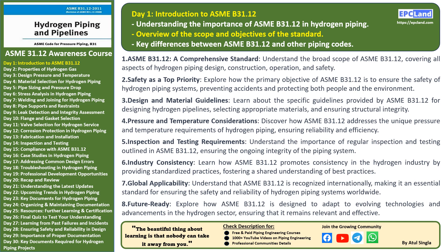Now that we have a solid foundation of why ASME B31.12 is essential, let's dive into the scope and objectives of this standard. ASME B31.12 is a comprehensive guide covering every crucial aspect of hydrogen piping. Its primary focus is on safety, making sure that hydrogen pipelines are designed, constructed, and operated in a way that minimizes risks to people, property, and the environment. It offers specific guidelines for designing these pipelines and carefully selecting materials that can withstand the properties of hydrogen, such as permeation and embrittlement.